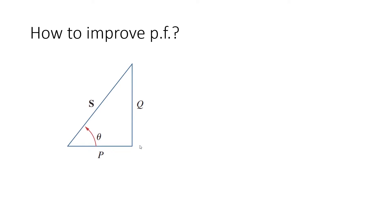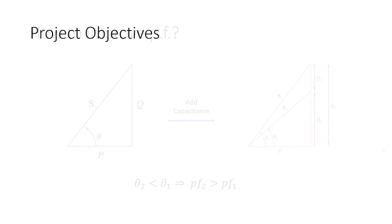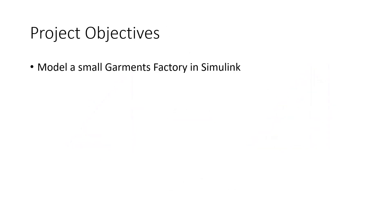How to improve power factor? Most of the loads in our industries are inductive. Here we can see a power triangle of the inductive load. To improve the power factor we can add a capacitor in parallel to the load. If we add a capacitor parallel to the load, the total reactive power will reduce from Q1 to Q2. The capacitor draws a negative reactive power QC from the system, so the total reactive power reduces. The power factor angle also reduces from theta1 to theta2, thus improving the power factor.